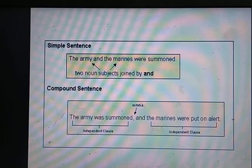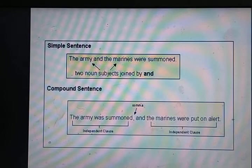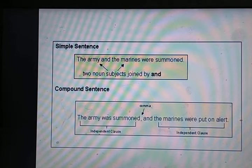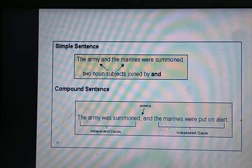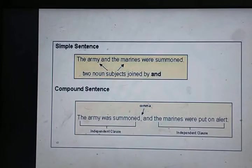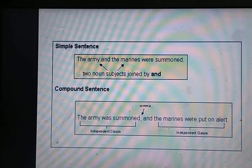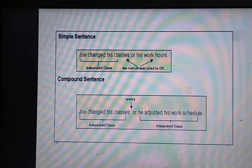Simple sentence: 'The army and the marines were summoned' — army और marines दो nouns हैं, इसलिए 'and' से पहले comma नहीं आएगा। Compound sentence: 'The army was summoned, and the marines were put on alert' — दोनों independent clauses हैं क्योंकि दोनों का अपना subject और predicate है, इसलिए 'and' से पहले comma लगा।